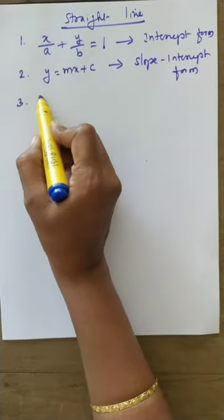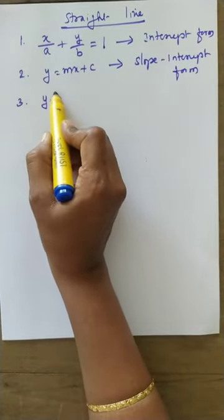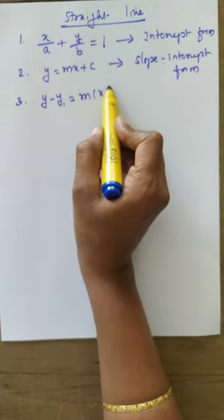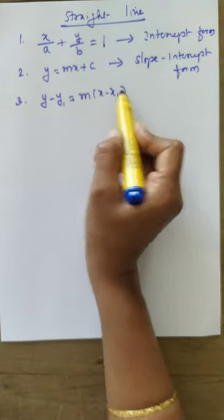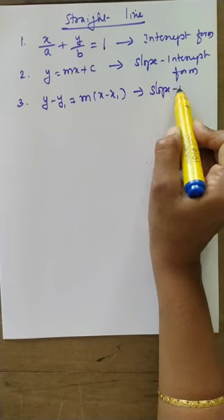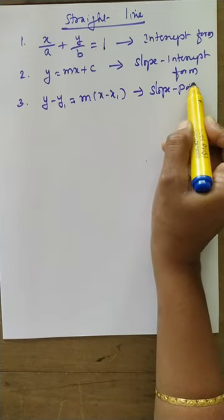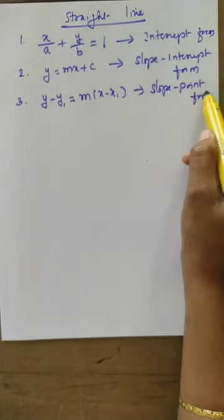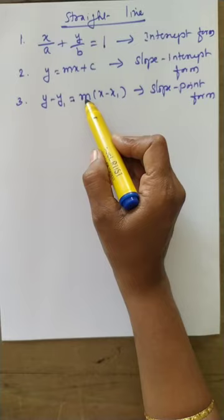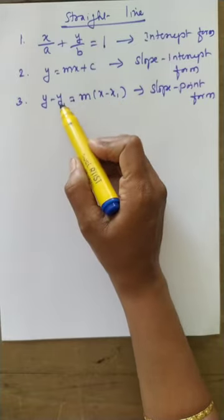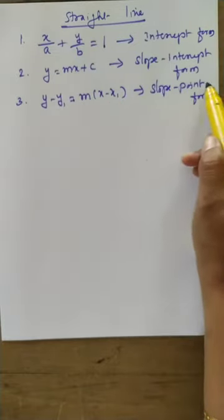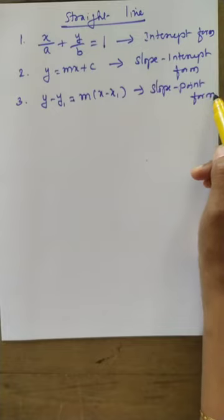Third one: y minus y1 is equal to m into x minus x1, called as slope point form, because slope m and point x1, y1 are given.